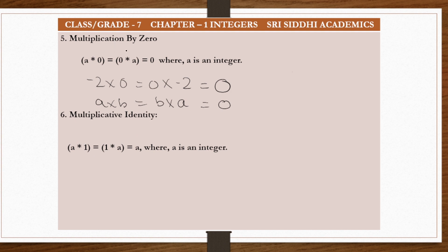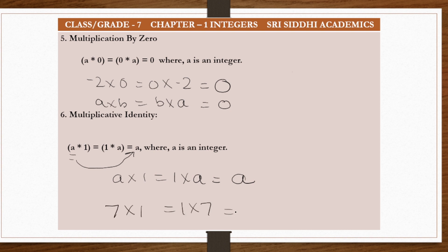Now let's understand multiplicative identity. Whenever an integer a is multiplied by 1, the identity of the integer doesn't change — it will always remain a, whether you do a × 1 or 1 × a. For example, 7 × 1 = 7, and −7 × 1 = −7. The integer doesn't lose its sign or its value.